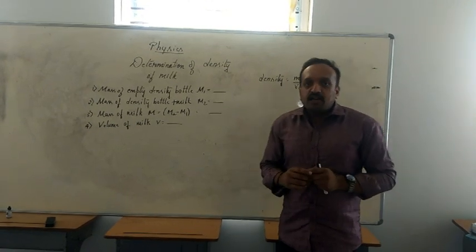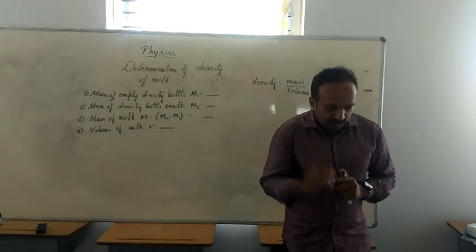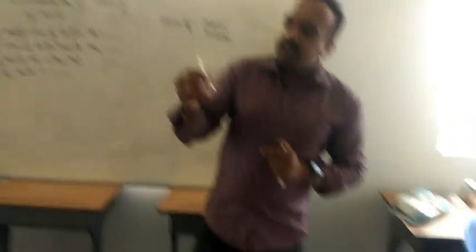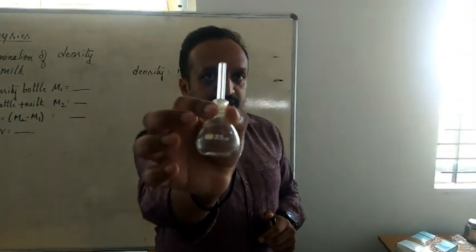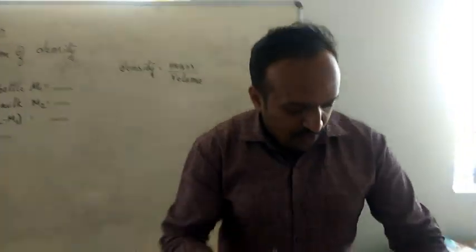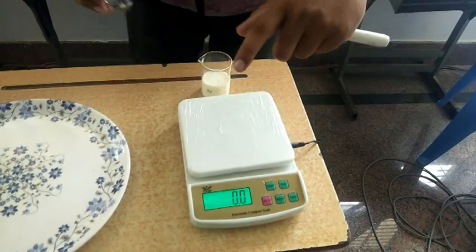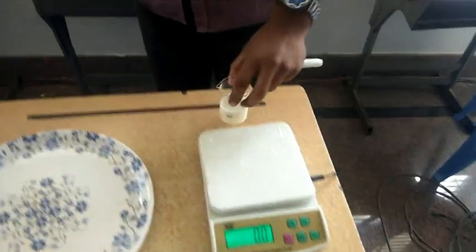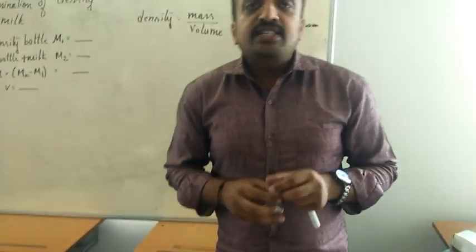The materials required to do this experiment are a density bottle measuring 25 ml and a weighing machine to measure the mass and the milk to find the density. First step,